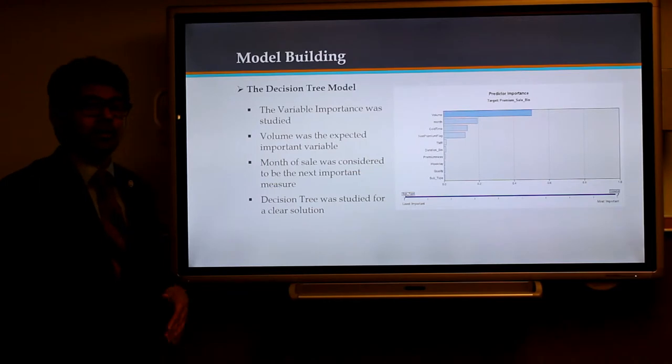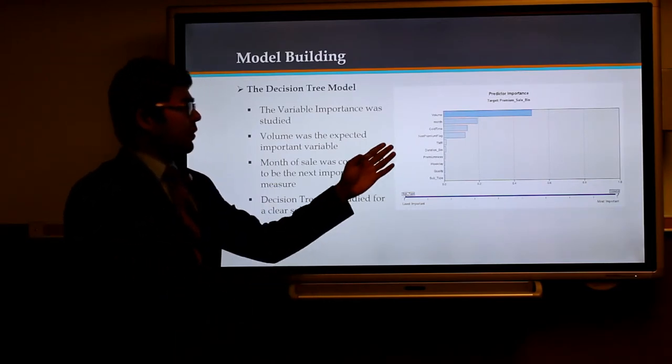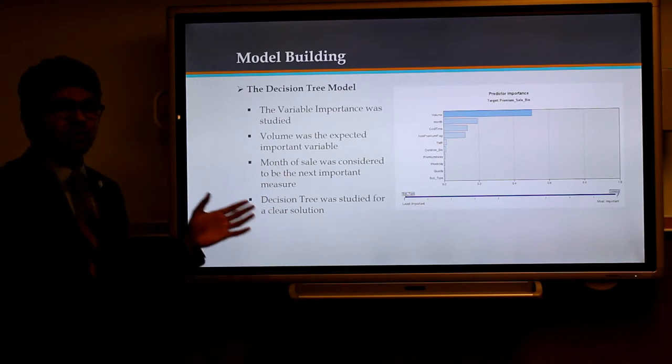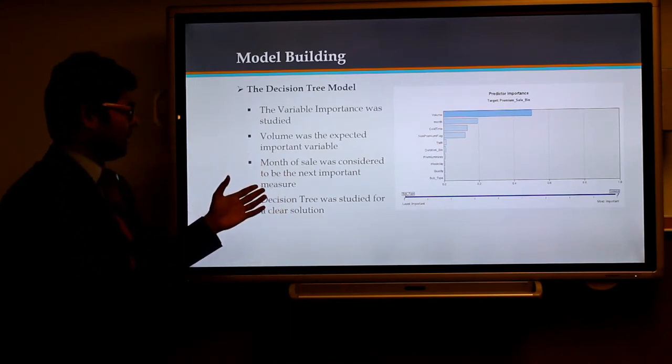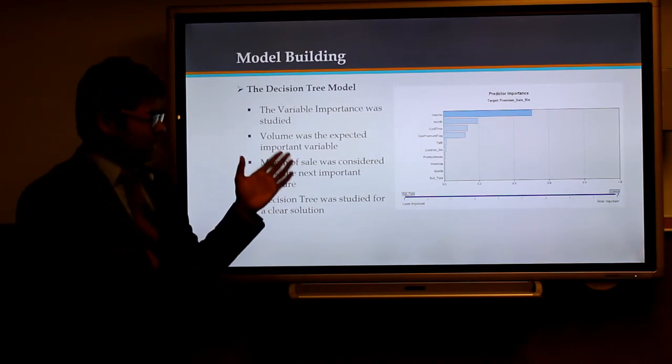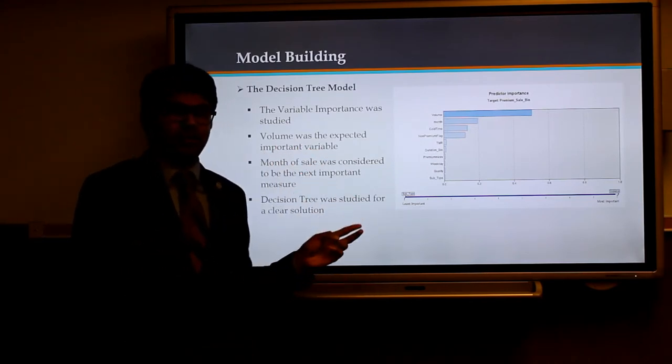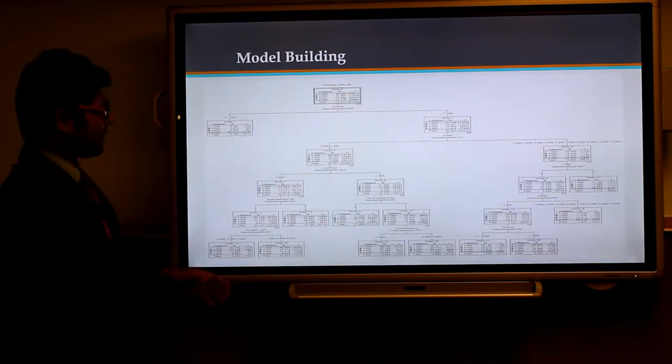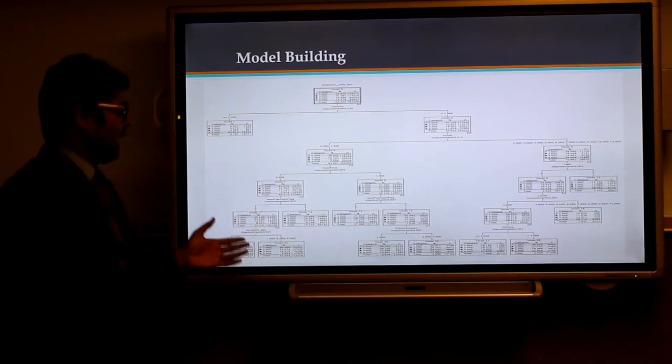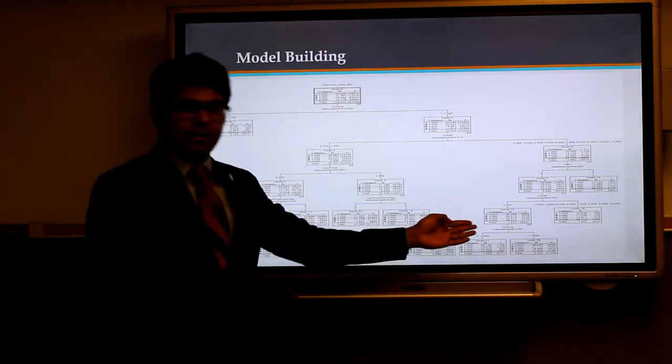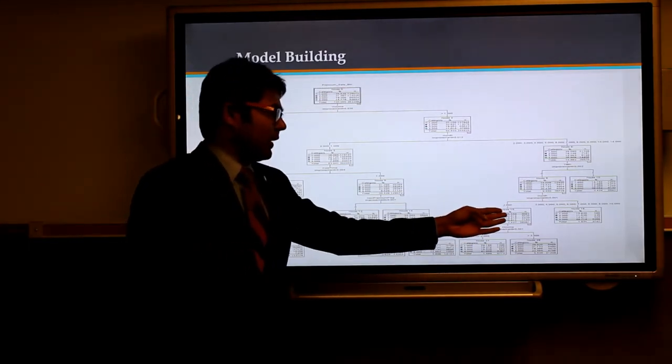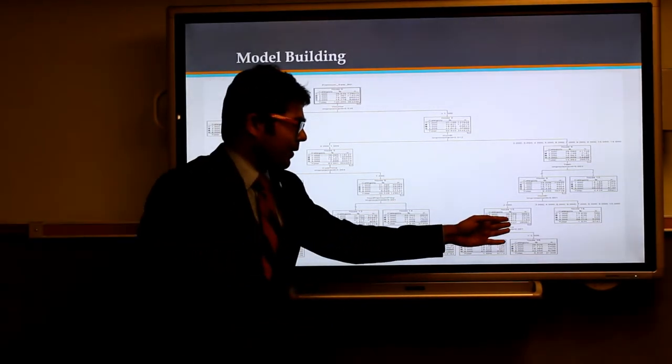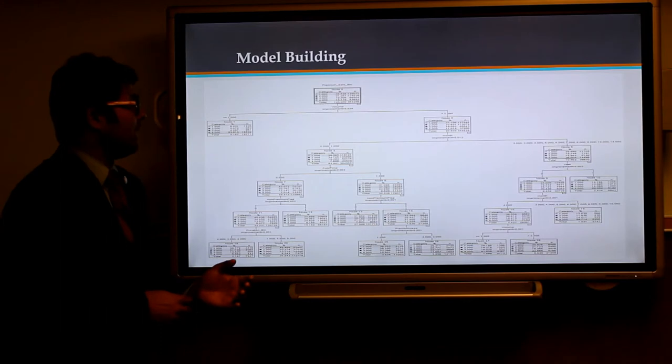Then we saw the importance of the variables used in this project. First, we came to know that volume is the most important factor. Volume is the volume of the shop which is selling these products. The next important variable was found to be the month of sale, defined by 12 different values for each month. The decision tree gives us a detailed report. There are various factors that could be analyzed. If you take this one as an example, we could interpret it like: if the month is going to be 2, that is February, and the team member ID is 0, that is there is no team representative, then there is going to be 7.42 percentage of sales probability that could be predicted well.